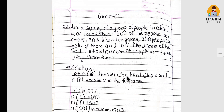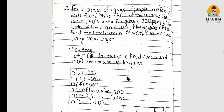Group C, question 11: In a survey of a group of people at a fair, it was found that 60% like circus, 50% like fun games, 200 people like both, and 10% like none of them. Find the total number of people in the survey.